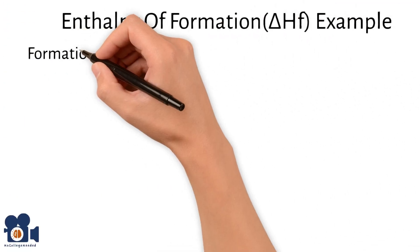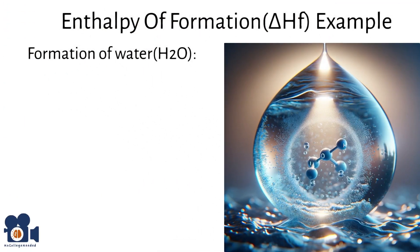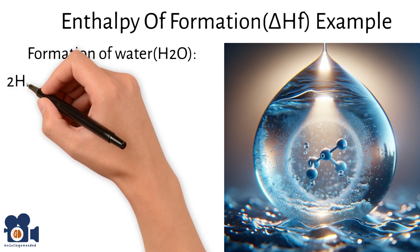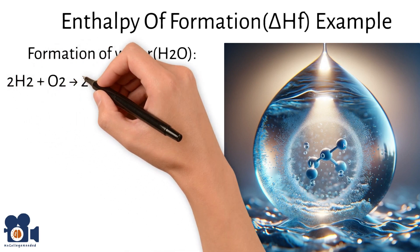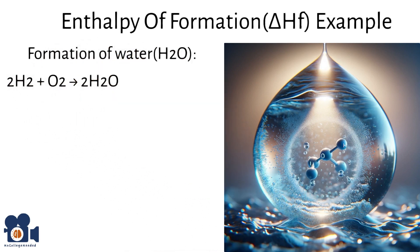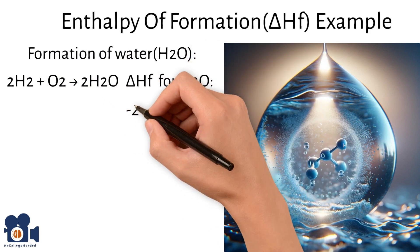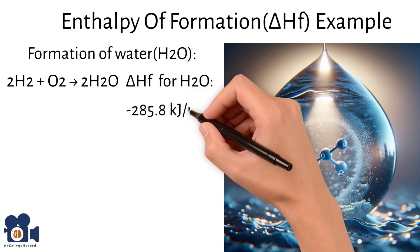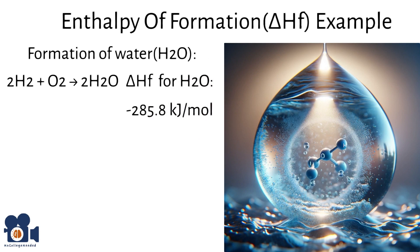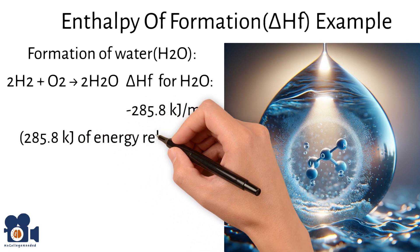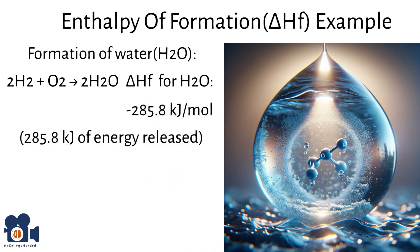Let's go through an example. Consider the formation of water H2O from its elements hydrogen H2 and oxygen O2, both in their standard states. The equation looks like 2H2 plus O2 going to 2H2O. The delta Hf for H2O is approximately negative 285.8 kilojoules per mole, indicating that the formation of water from hydrogen and oxygen gas releases 285 kilojoules of energy per mole of water formed since elements in the pure state release zero kilojoules.